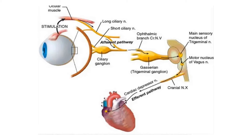Let's see the afferent pathway of the oculocardiac reflex. When the extraocular muscles are stretched, the long and short ciliary nerves are stimulated, which leads into the ophthalmic branch of the trigeminal nerve, which relays in the ganglion known as the Gasserian ganglion, after which it leads into the main sensory nucleus of the trigeminal nerve in the floor of the fourth ventricle.